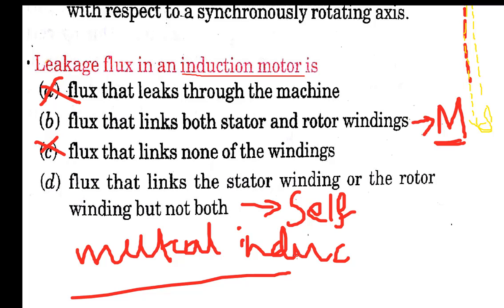Since both machines operate on the mutual induction principle, only the flux linking both windings contributes to power transfer. The flux linking only one winding — either stator or rotor but not both — does not contribute to power transfer. Instead, this self-linking flux creates self-reactance and causes a voltage drop. Therefore, option D is the answer. Thank you, keep watching and stay subscribed.